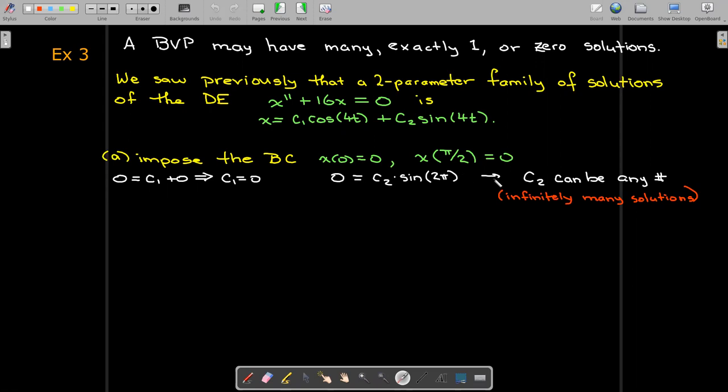So this is an identity. No matter what value of c_2 you choose, this will always be true. And so c_2 could be any number. And as a result, we would have infinitely many solutions of the form x(t) = c*sin(4t).